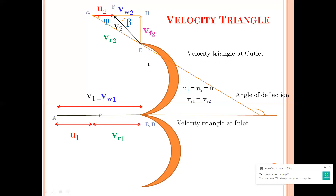In your problems there will be an angle of deflection given. Your angle of deflection is the angle made by the relative velocity with respect to your horizontal axis. Knowing my angle of deflection I can calculate the value of phi — it is nothing but 180 minus your angle of deflection. The remaining terms are the same as your normal velocity triangle at outlet.